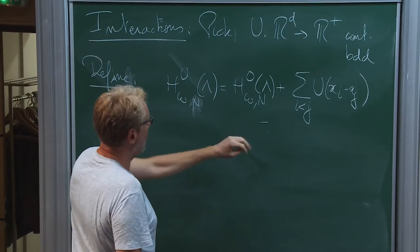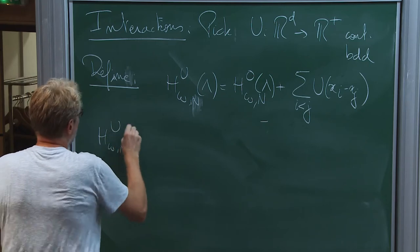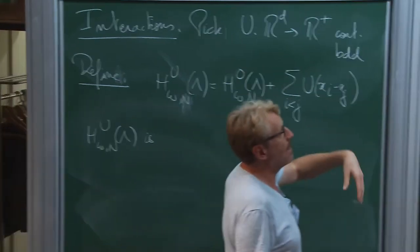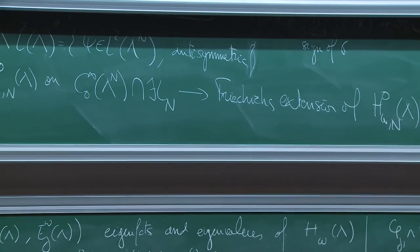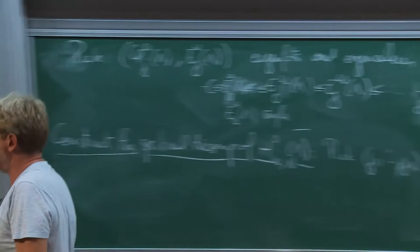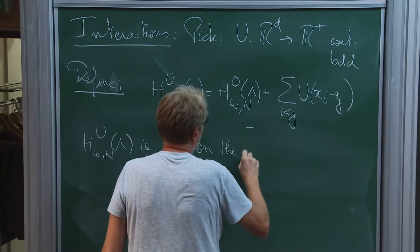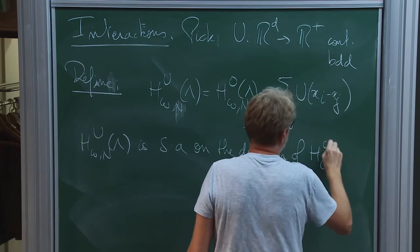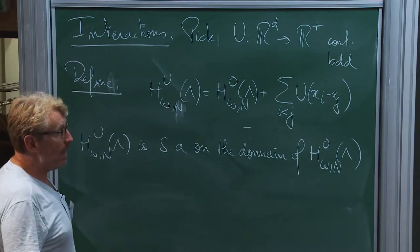So this defines H omega N U lambda. The fact that U is bounded will tell you that you can add it and the Friedrichs extension of this will have the same domain as without the potential U. This will again be self-adjoint on the operator domain of H omega N 0 lambda, and it's lower semi-bounded.